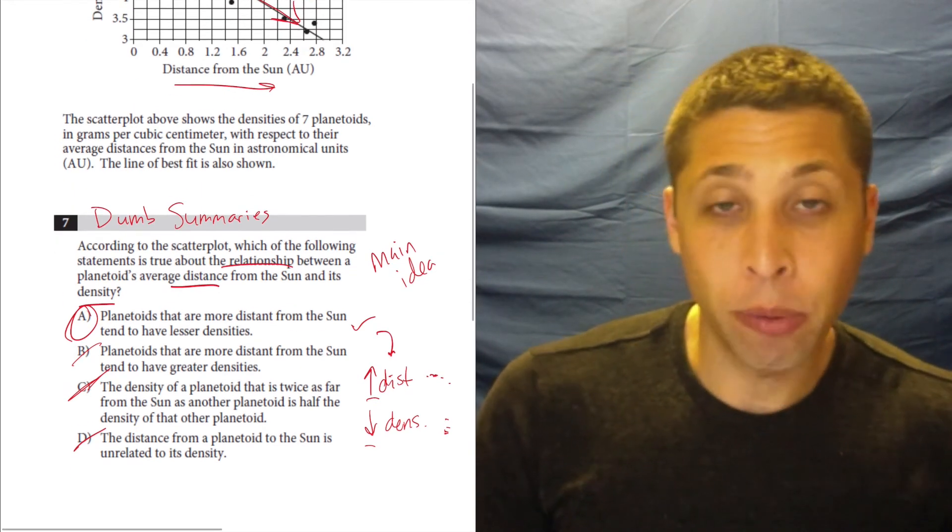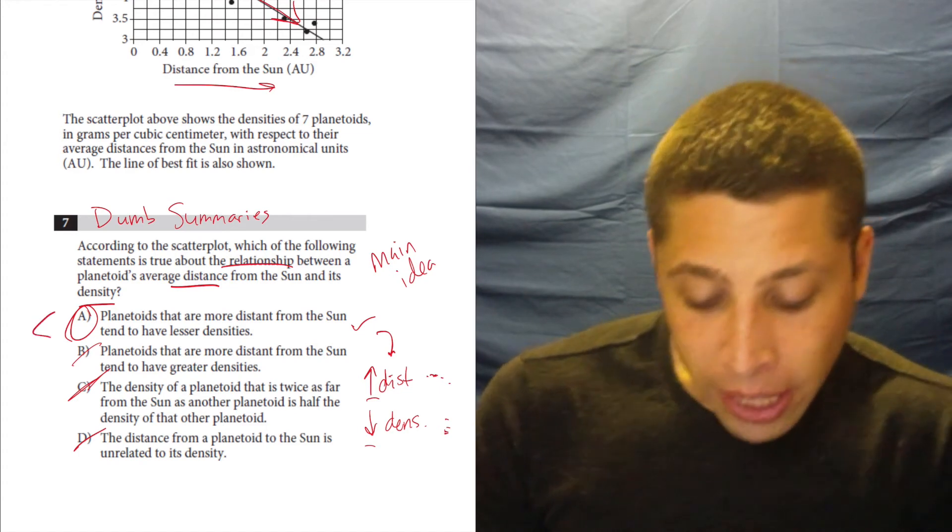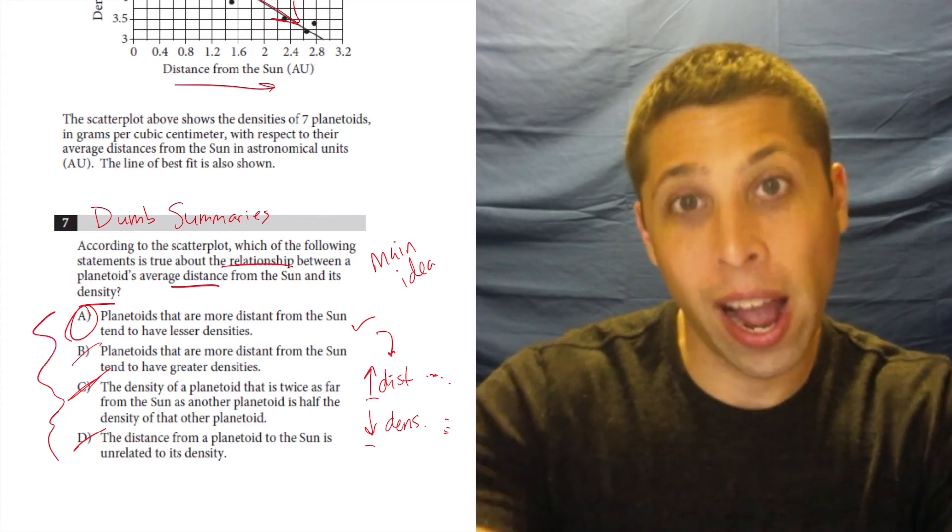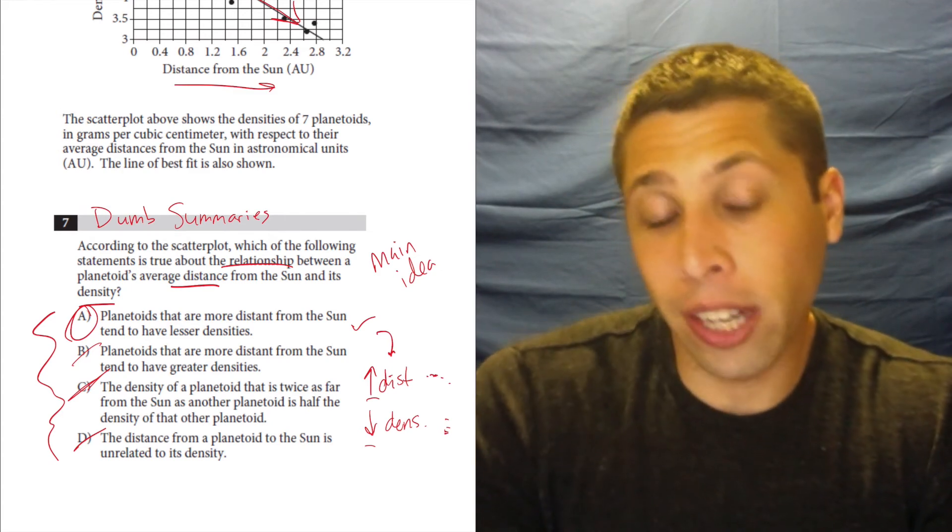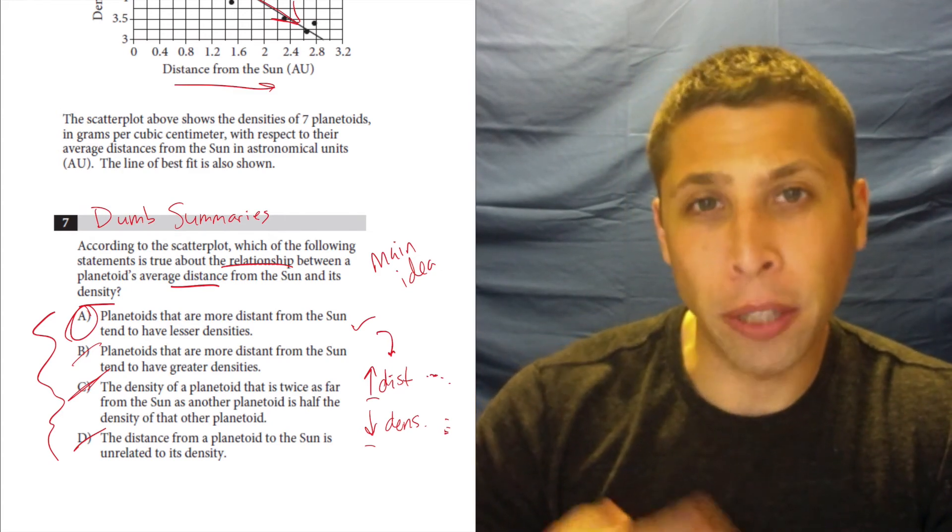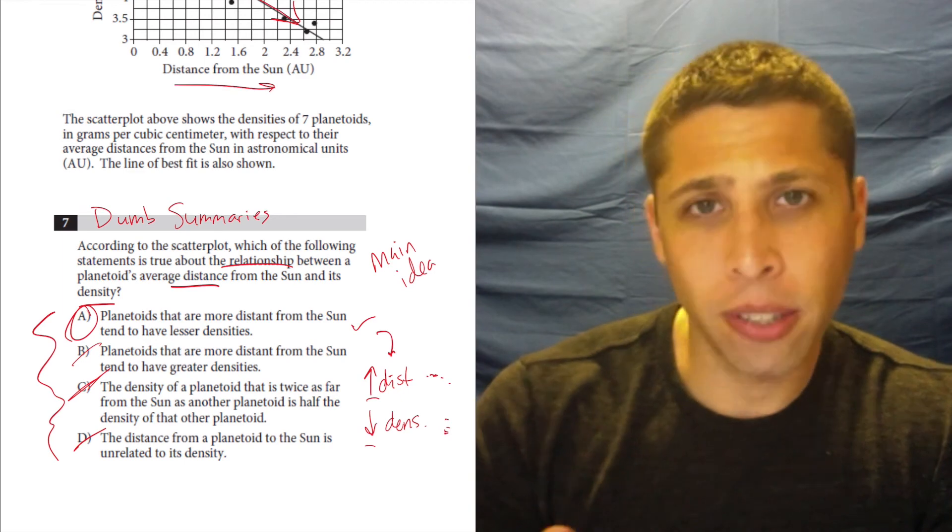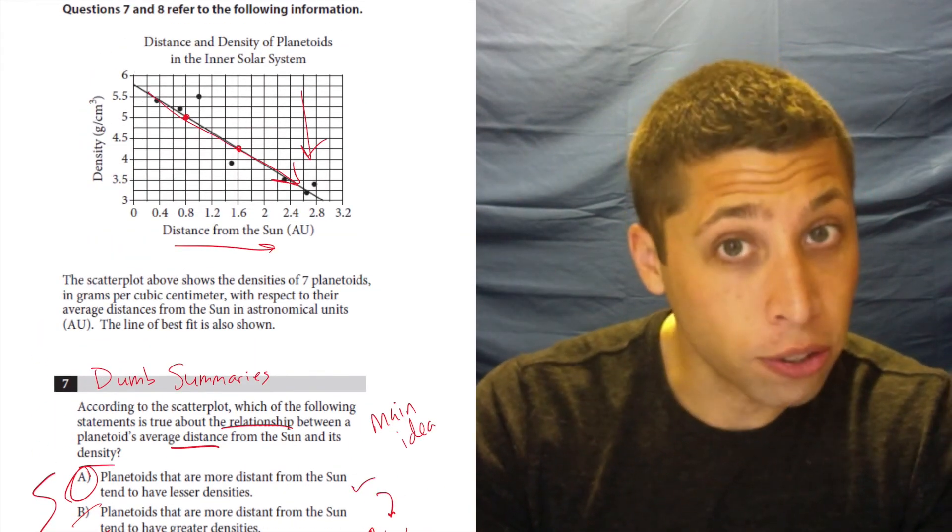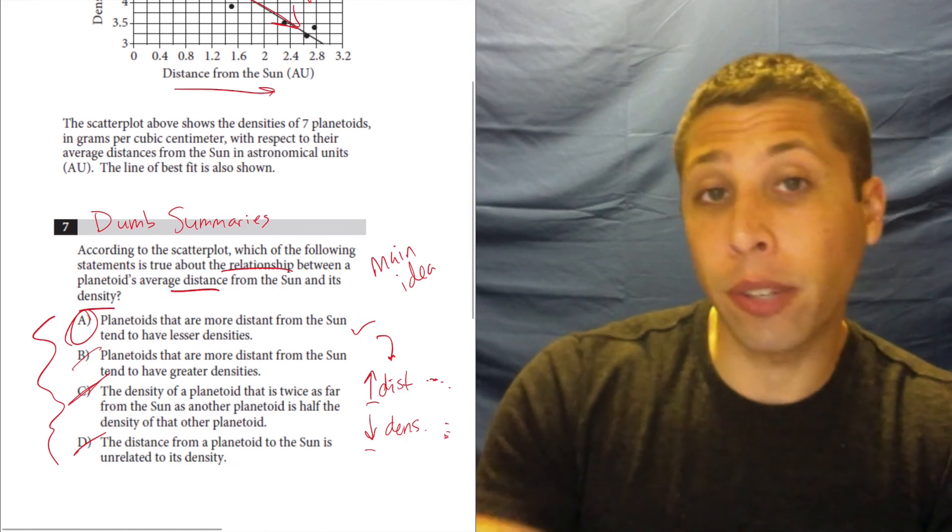So I think the reason people have trouble is they read these answer choices and try to match them with the graph. You might still get it right, but I think it is a bigger burden on your brain. The better thing to do is to read the graph and just kind of get the dumbest version of what's happening first, and then use that to get rid of some of the garbage.